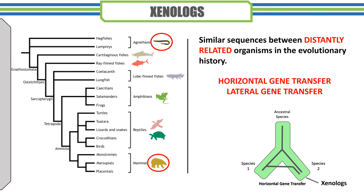Xenologues are formed by the transfer of genes from one organism to another unrelated organism. This process is known as lateral gene transfer, or horizontal gene transfer. Lateral gene transfer can occur among unrelated organisms, which is different from vertical gene transfer where genes pass from parents to offspring. Bacteria transfer genetic material among themselves to gain antibiotic resistance or virulence, and lateral gene transfer is a major contributor to disease outbreaks and the rise of hypervirulent human pathogens.